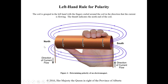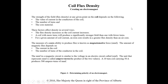The left hand rule for polarity tells us which end of an electromagnet is north and which is south. For this coil — potentially with a metal core — we curl our left hand in the direction of current and our thumb points to the north pole. We need to know the direction of current, then curl our left hand around the coil, and whichever side our thumb points to is the north, and the other end is the south. We can use this for two coils to know how the field develops between them.